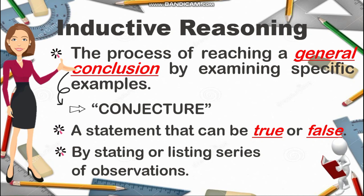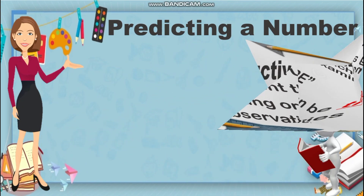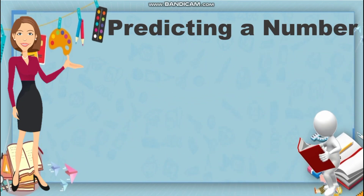To arrive at a general conclusion, you do so by stating or listing a series of observations. So, given a situation, you observe, list your observations, and then create a general conclusion or a conjecture. We have several situations wherein inductive reasoning is very useful. First, we have predicting a number. This usually happens when you are given a series of numbers, especially when there are patterns.